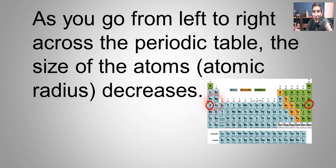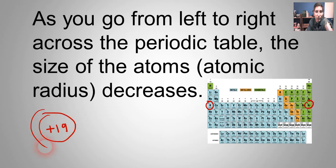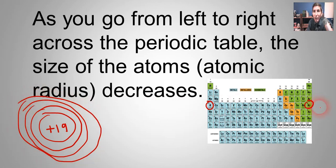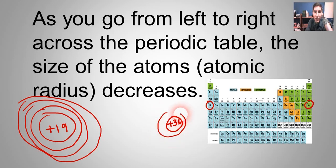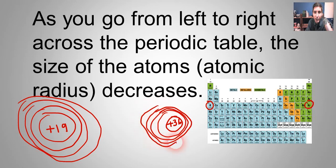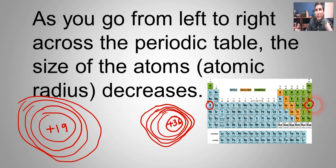Potassium has an atomic number of 19, meaning it has 19 protons trying to pull in those four energy levels. Krypton, on the other hand, has almost twice as many — 36 protons trying to pull in the same number of energy levels. We have a much stronger positive charge in krypton, and so it's able to pull in those energy levels much more tightly. That's the reason atoms on the right side of the periodic table tend to be smaller than the ones on the left — because they have more protons.